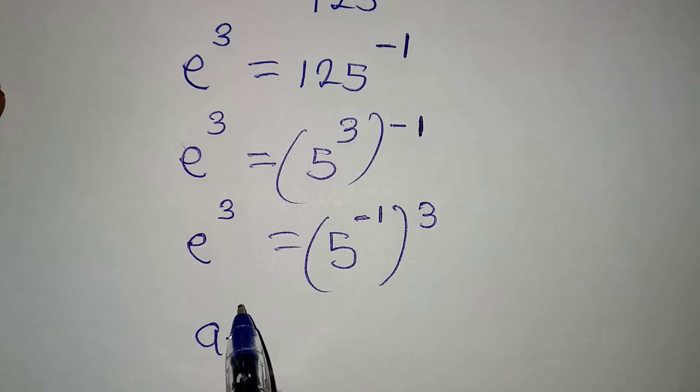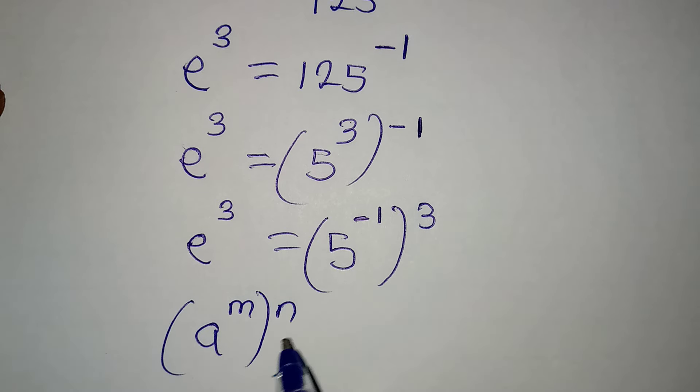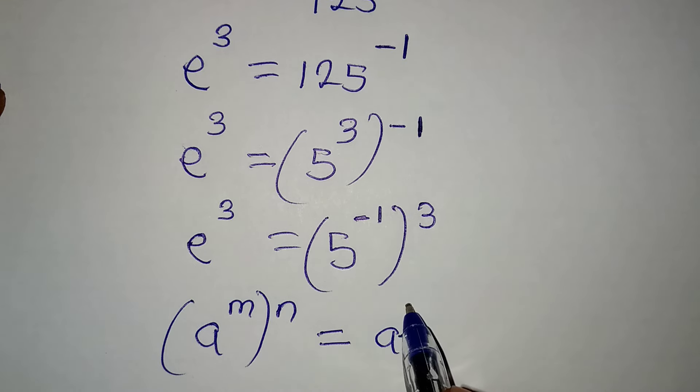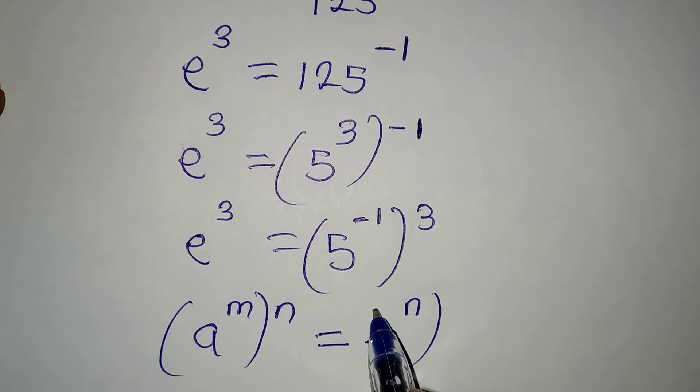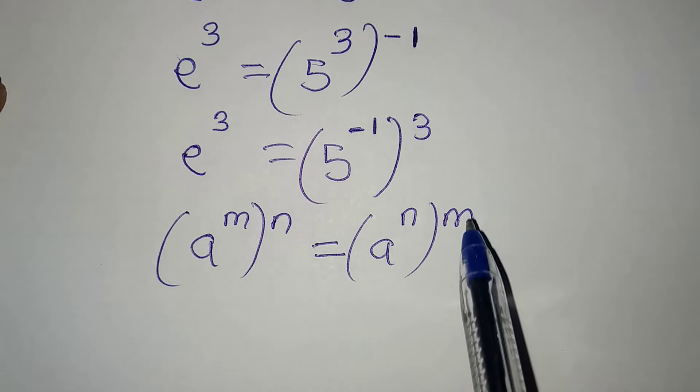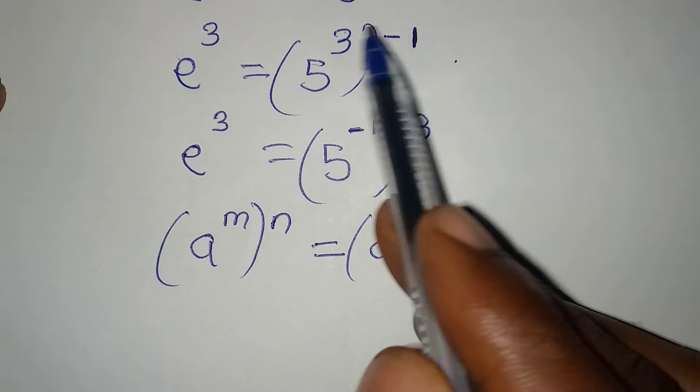Because if you have a to the power of m, then to the power of n, this can be rearranged so that you have a to the power of n, then to the power of m. And that is the same thing I've done as I took 3 outside and then brought minus 1 inside.